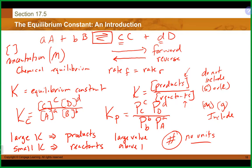K is an equilibrium constant, meaning it's the same value regardless of what you do in that particular reaction. You'll always come to rest at the same proportion of products to reactants, whether you started with all reactants, all products, or a mixture. The only time you get a different value for K is if you change the temperature. So all experiments at 25°C will yield the same K, and all experiments at 35°C will yield the same K, but comparing 25° to 35° will give different values.